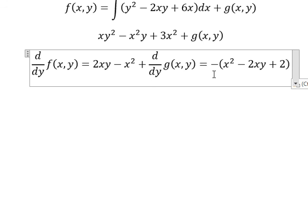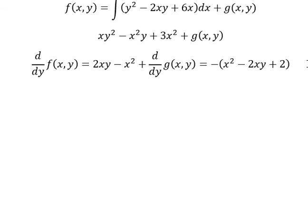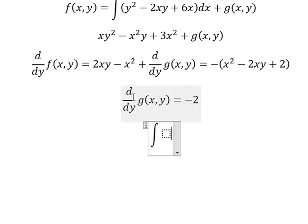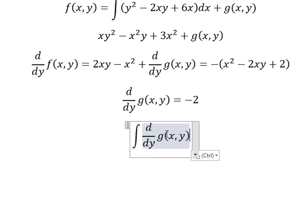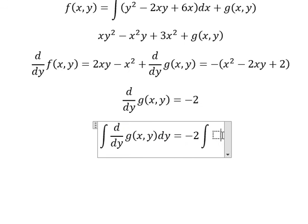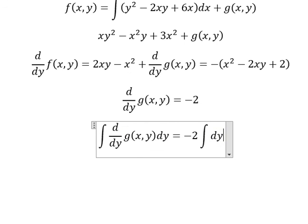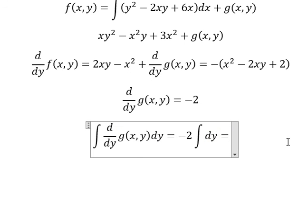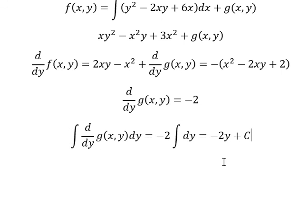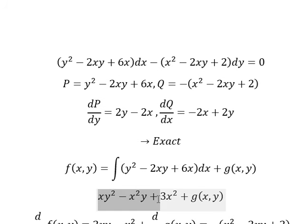Now we need to simplify both sides, so we just have only a negative number two. Next we take the integral for both sides, and this one we have negative two y plus C.